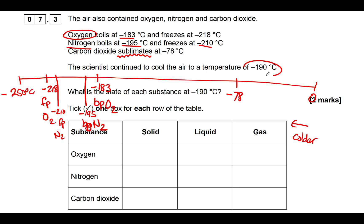The question says a scientist cooled the air to a temperature of minus 190°C, and asks what state each substance will be. We're interested in minus 190°C, which sits between minus 183 and minus 195 on our number line — so it's right here.